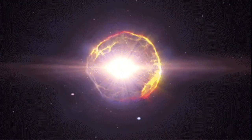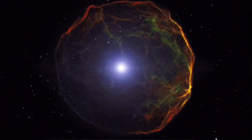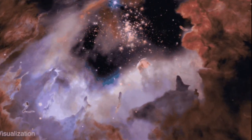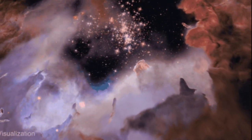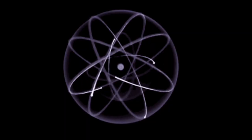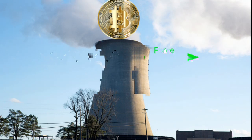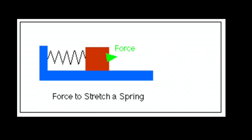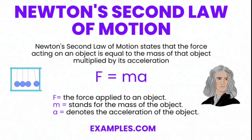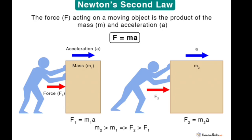While E=mc² is groundbreaking, several other formulas are equally vital in specific contexts. Newton's second law of motion, F equals MA, is the foundation of classical mechanics. The law of universal gravitation, F equals GM1M2 divided by R squared, is another cornerstone.